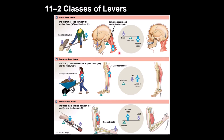In a second-class lever, the load is in the middle, the fulcrum is on one side, and the applied force is on the opposite side. An example is in the ankle area, where the posterior leg muscles contract to produce foot movement, allowing the body weight to be elevated against gravity.